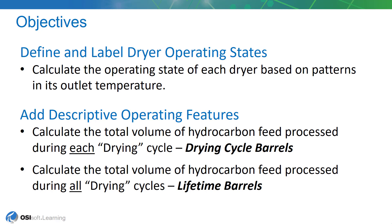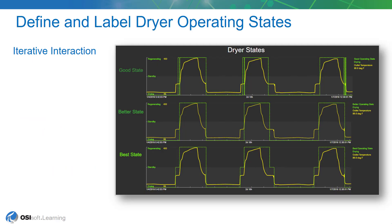The next step is to define and label the dryer operating states, and we're going to take an iterative approach to this. In the trend, you can see three traces — the yellow traces are the outlet temperature of one of the dryers. What we'd like to do is identify the regenerating state as the time that temperature rises. The green trace shows the results of our analytic that will identify the cycles for each dryer.